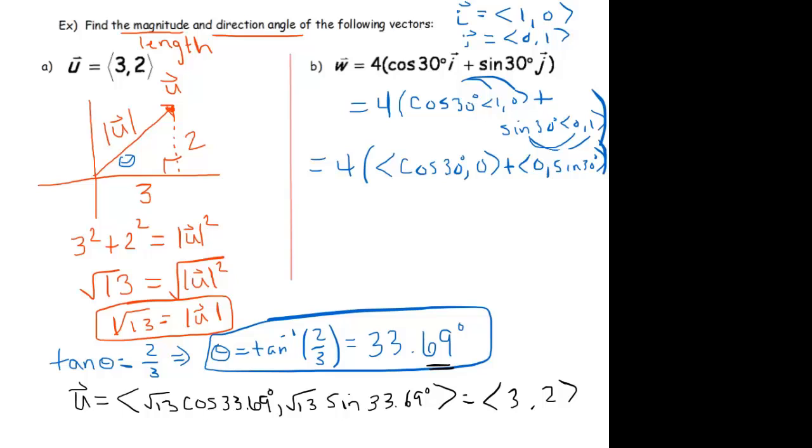And now we can add these two vectors here. I haven't distributed the 4 yet, that's going to distribute after. It's outside of all these parentheses. Cosine of 30 plus 0, I can just add those. It gives me cosine of 30 degrees. 0 plus sine of 30 gives me sine of 30 degrees.